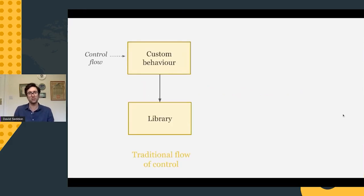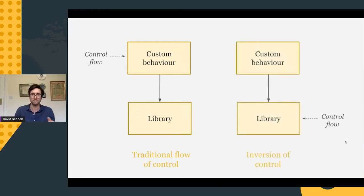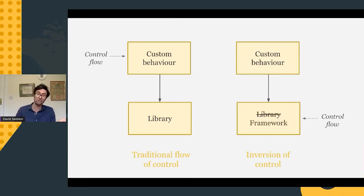In the traditional flow of control, we have some custom behavior that calls into a library — say, a script you've written that imports a function from a library. Inversion of control is a little different: the control flow is with the library, and we customize it with some extra code. We have a name for libraries like this: frameworks. There's an interesting thing about the diagram — the arrows.